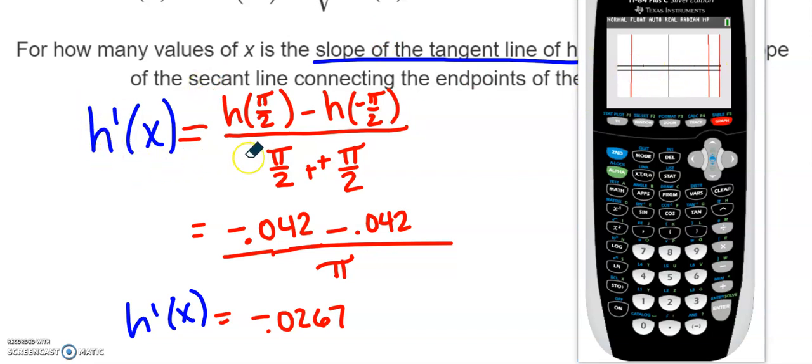So again, the process there is you're going to find the slope of the secant line—all this stuff in red, find the slope of the secant line, then set that equal to your slope of the tangent line, which would be your derivative. Figure out where those two things cross. In this case, they cross one, two, three times.